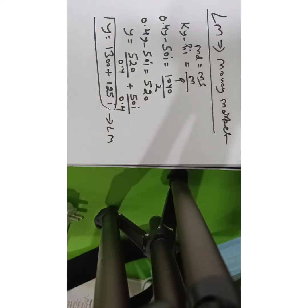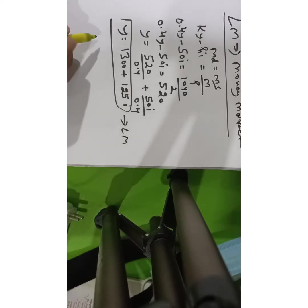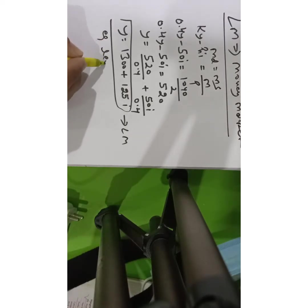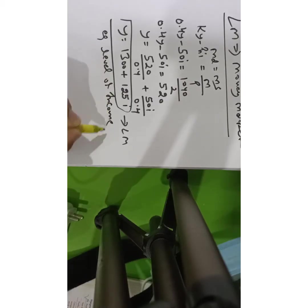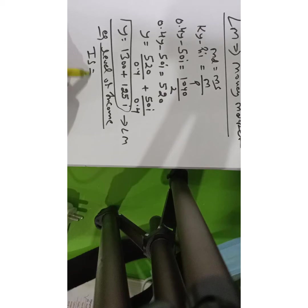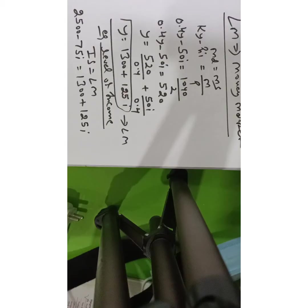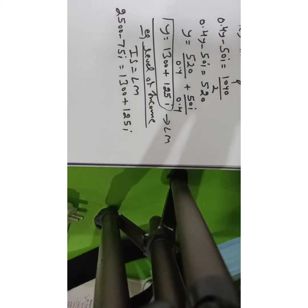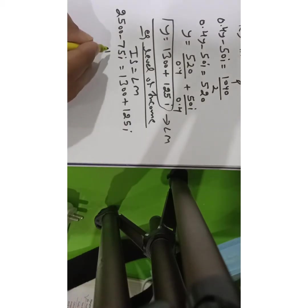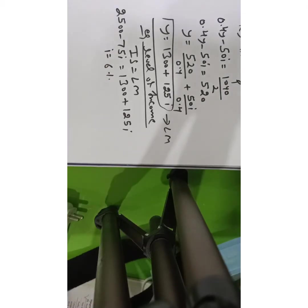Now comes the real part — how to get to the equilibrium level of income. In order to get equilibrium level of income, you need to equate both IS and LM side by side: IS equals LM. Our IS equation was Y equals 2500 minus 75i, and our LM equation was Y equals 1300 plus 125i. Solving these together, you get i equals 6%.